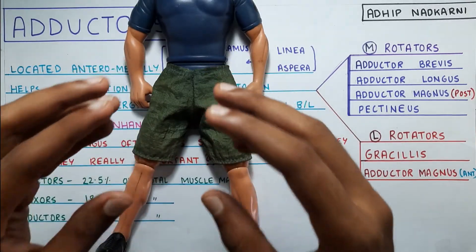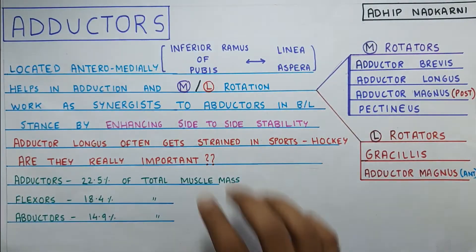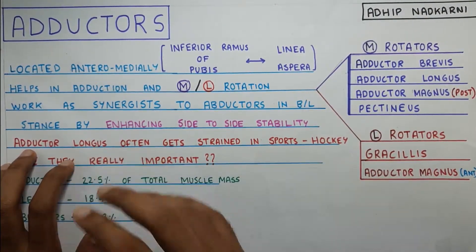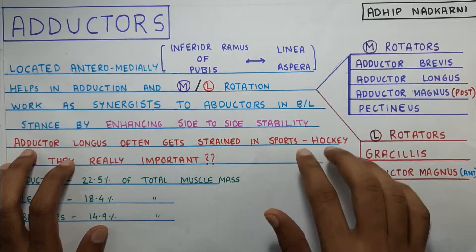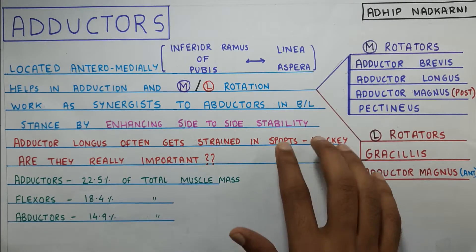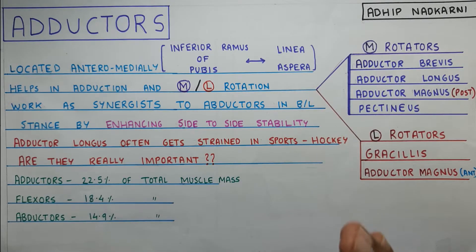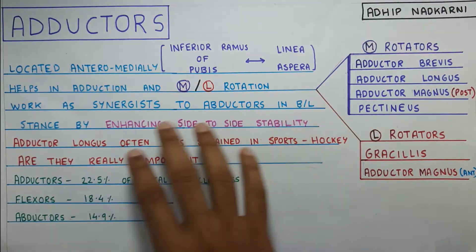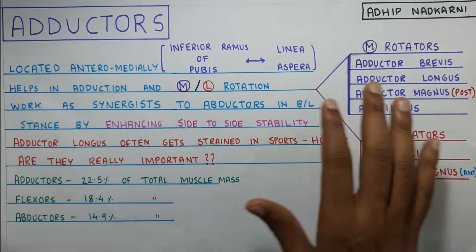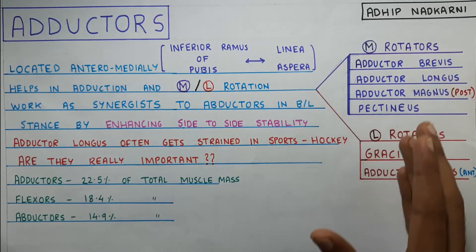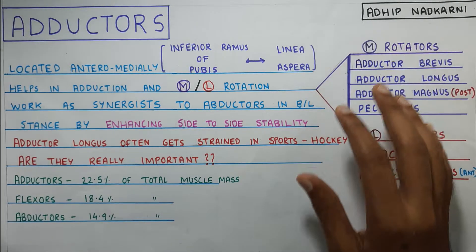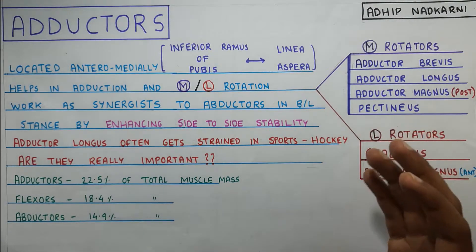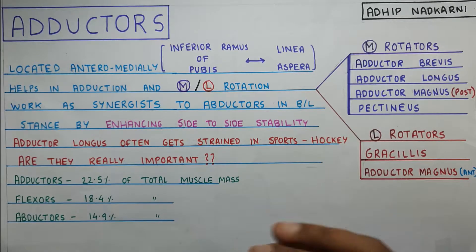Another important point is that adductor longus gets very commonly strained in hockey sports — something to keep in mind. This brings up the question: adductors help in adduction and minimally in medial and lateral rotation, so what major role do they actually play in the human body? Are they really that important? That question arises in every person's mind.